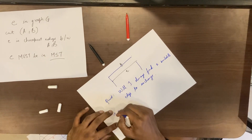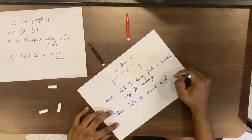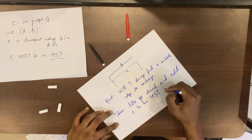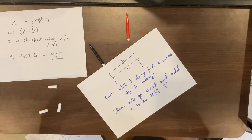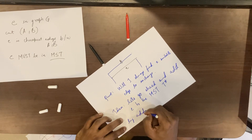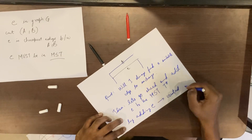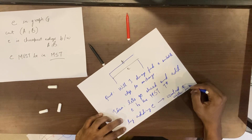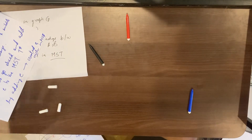Here's the idea: let's go ahead and add E to the MST T star. Since this was an MST, by definition it did not need any more edges. So by adding E, we have definitely created a cycle in the tree.